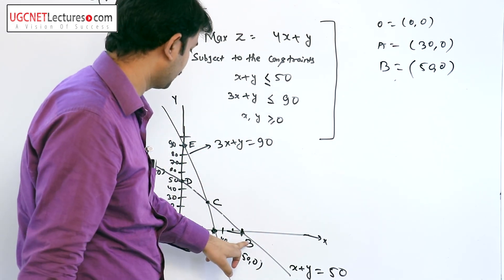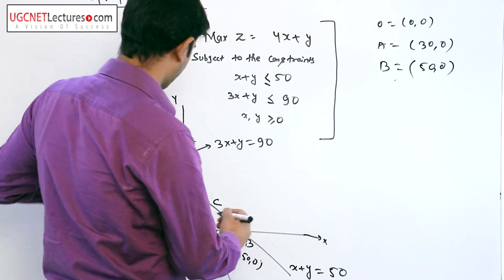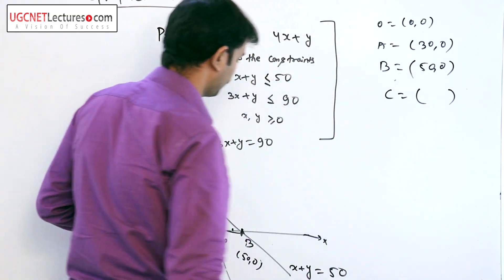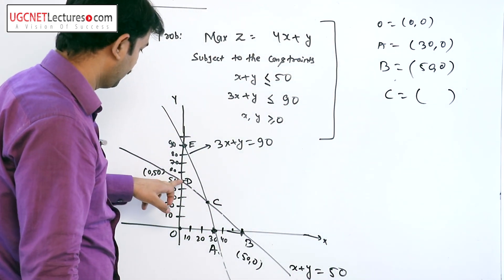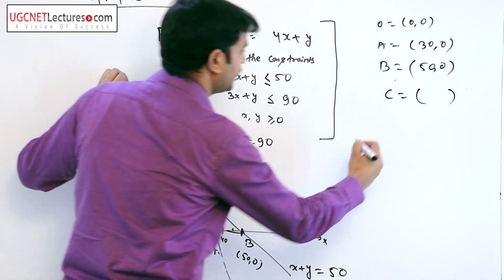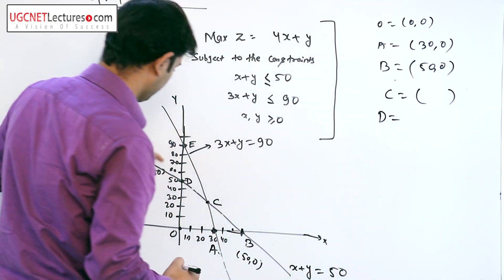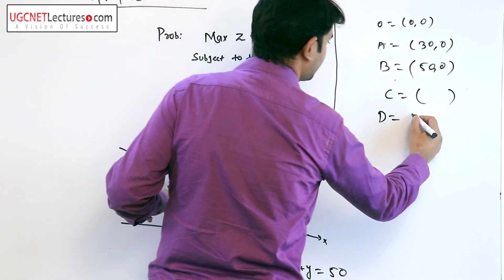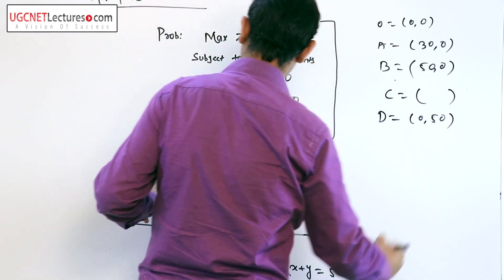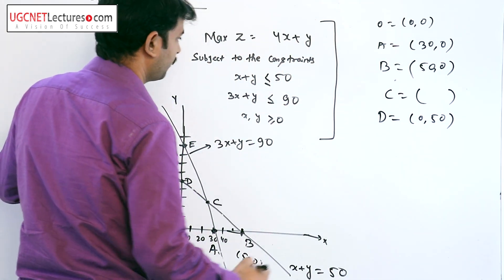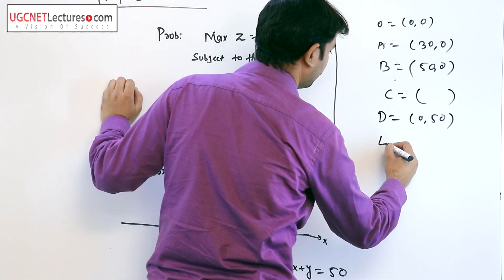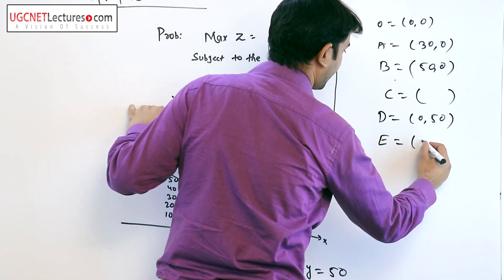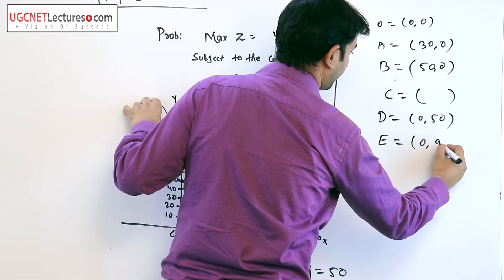Point B is at (50, 0). We need to find the coordinate of point C, which is the intersection of the two lines. Point D is at (0, 50) and point E on the y-axis is at (0, 90).